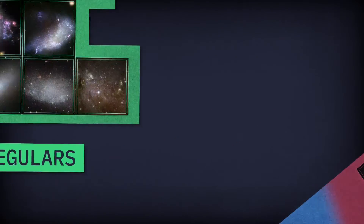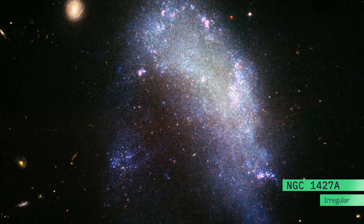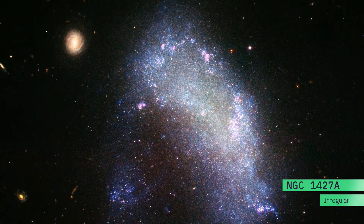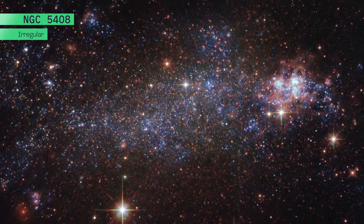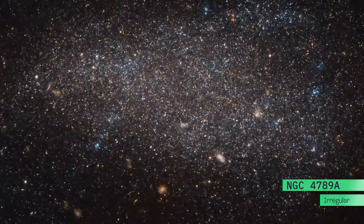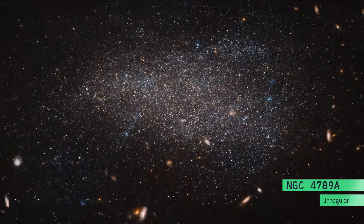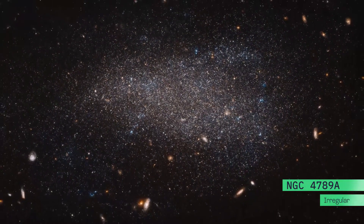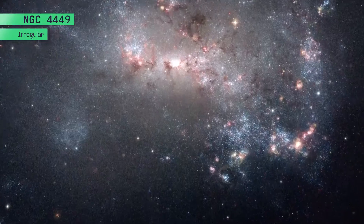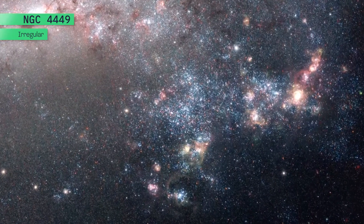Irregular galaxies don't fit into one of the other categories. They are shapeless and have no symmetry or ordered structure. Irregulars may hold old and young stars and often have knots of gas and dust forming new stars.